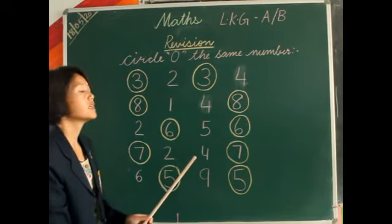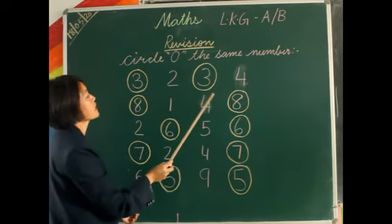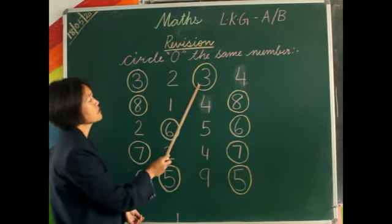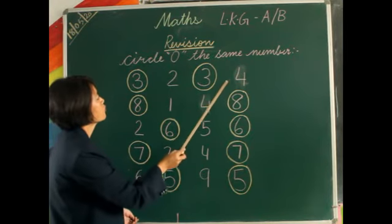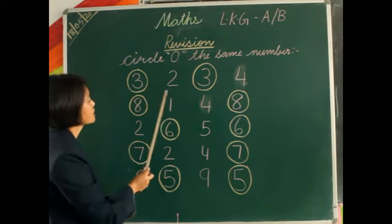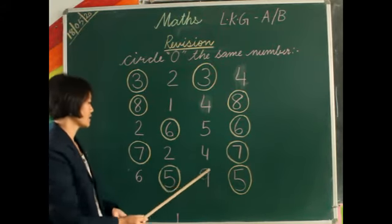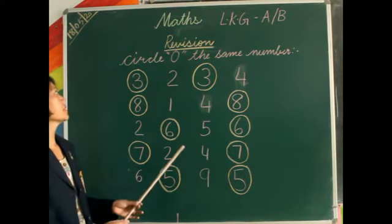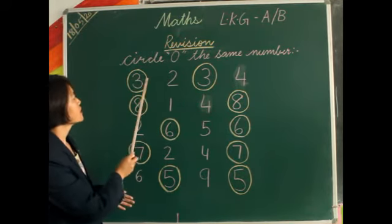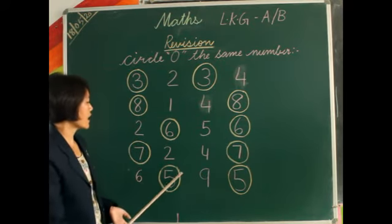Now we will do the revision once again. Here: 3, 2, 3, 2, 3, and 4 — from this line, which numbers are the same? Number 3 — that 3 is here and 3 is also here. So 3 and 3 are the same number. And here: 8 and 8, same numbers; 6 and 5 and 5. So you have to circle the same numbers — 3, 3, 8, 8, 6, 6, 7, 7, and 5, 5.